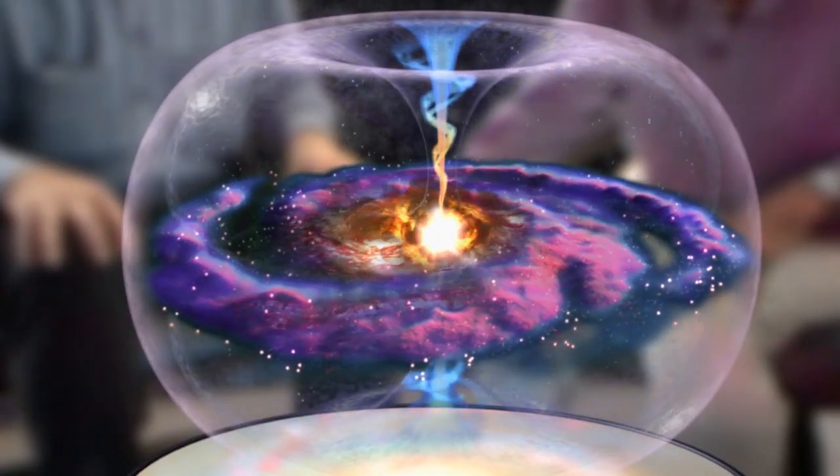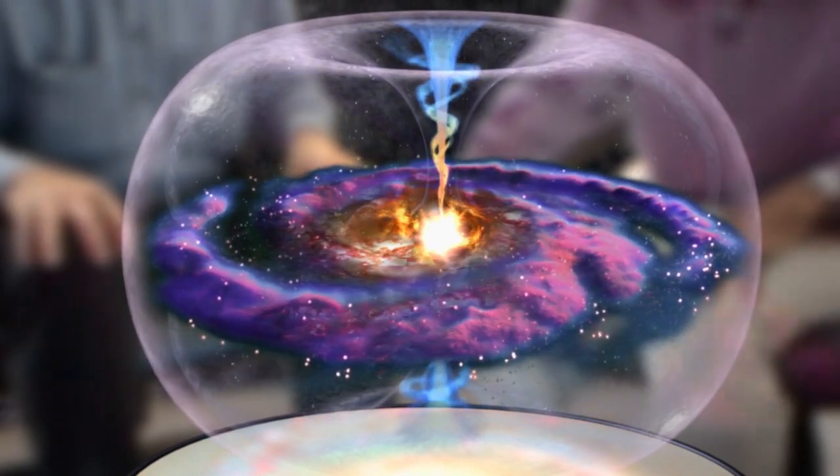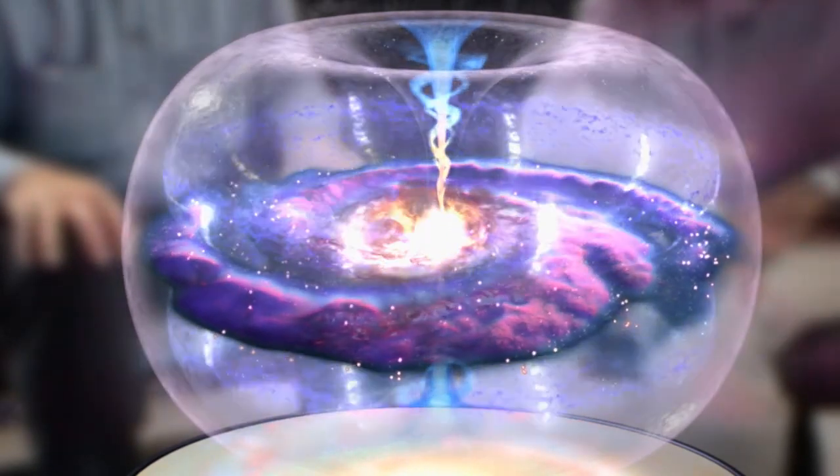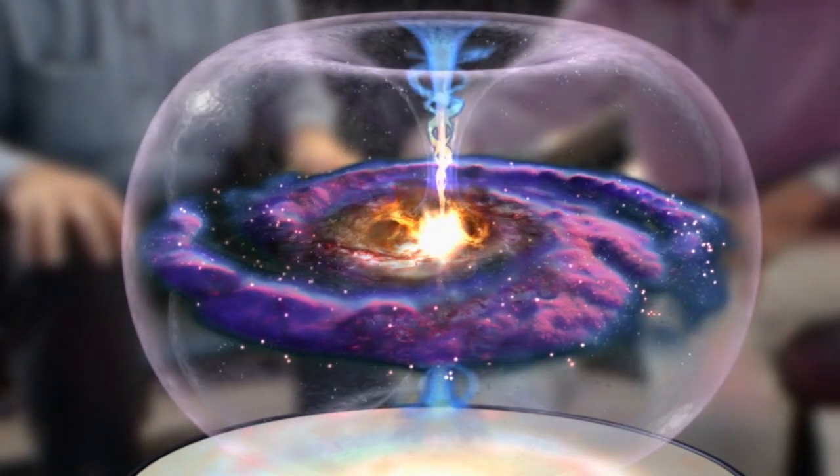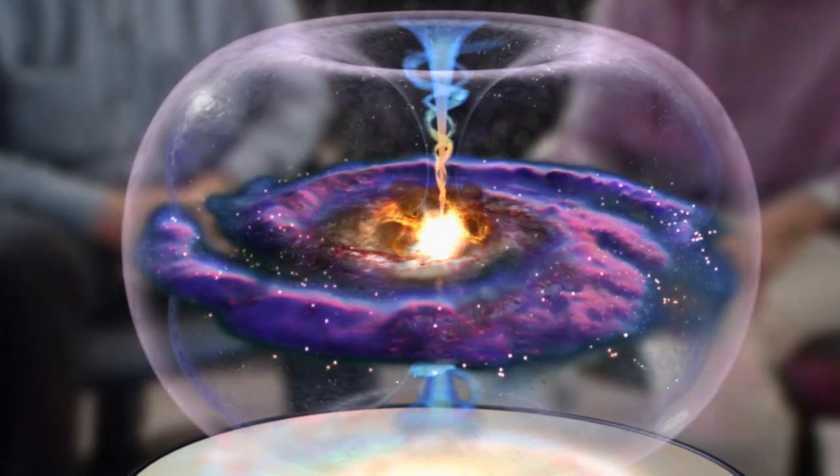Stars move from the galactic disk out to the halo, down the vortices, and back out again. Stars like Arcturus, for instance, have done that path already.